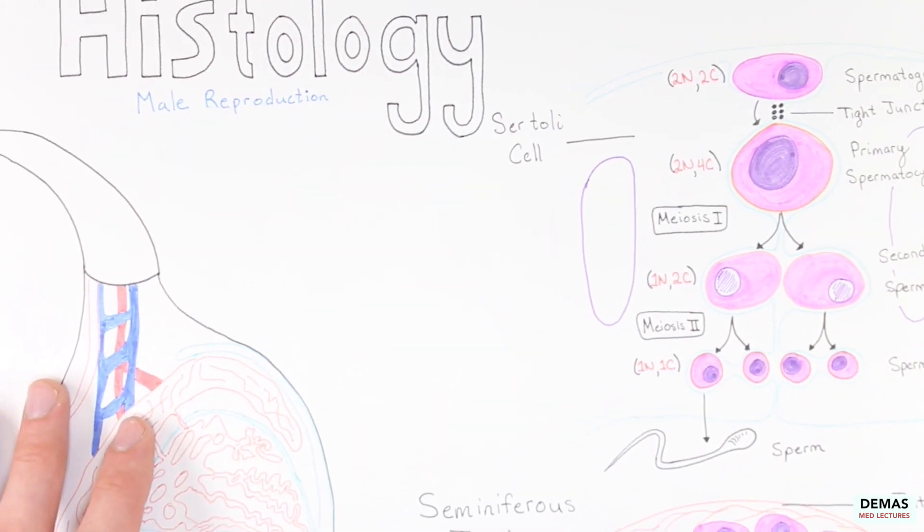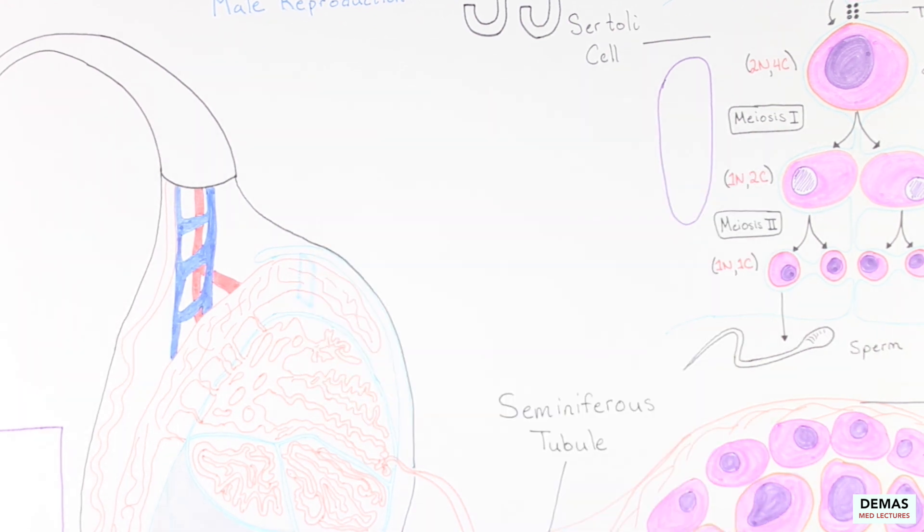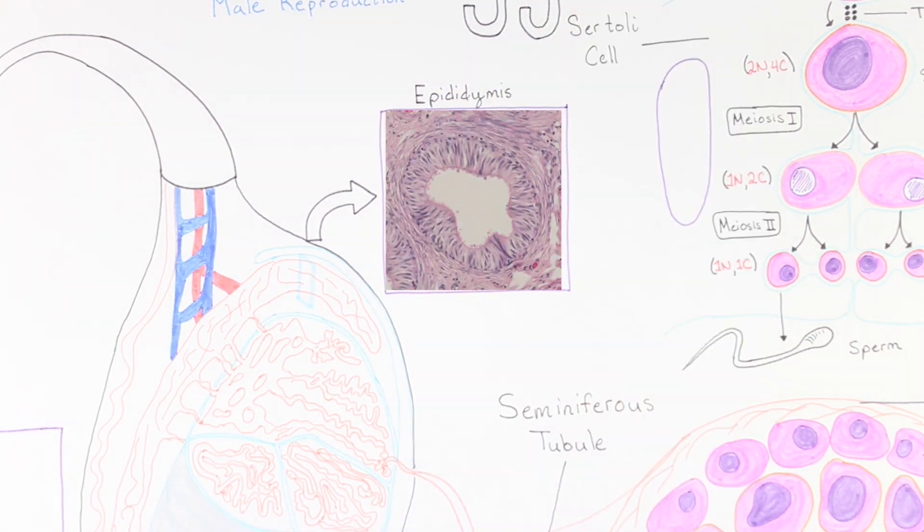The sperm are transported out of the testis proper to the next structure called the epididymis. The epididymis is lined by pseudostratified epithelium with long microvilli known as stereocilia. This is the location where maturation of the spermatid occurs and is a holding place for sperm for later release.